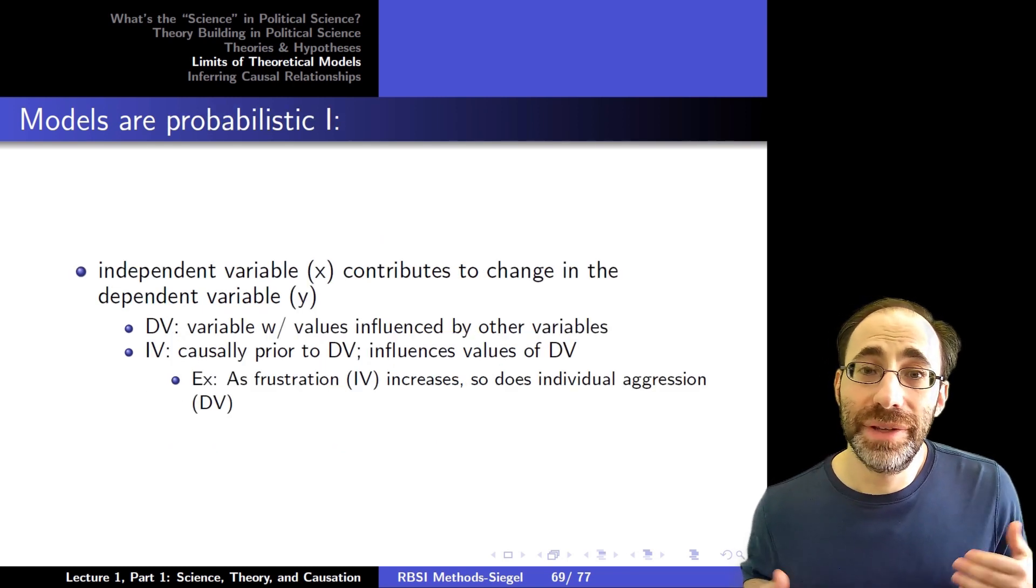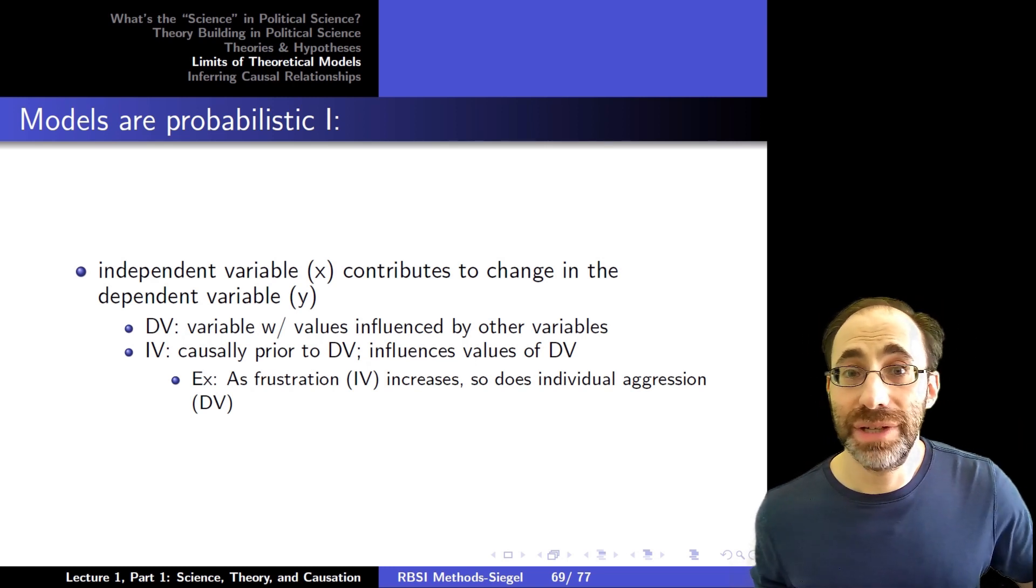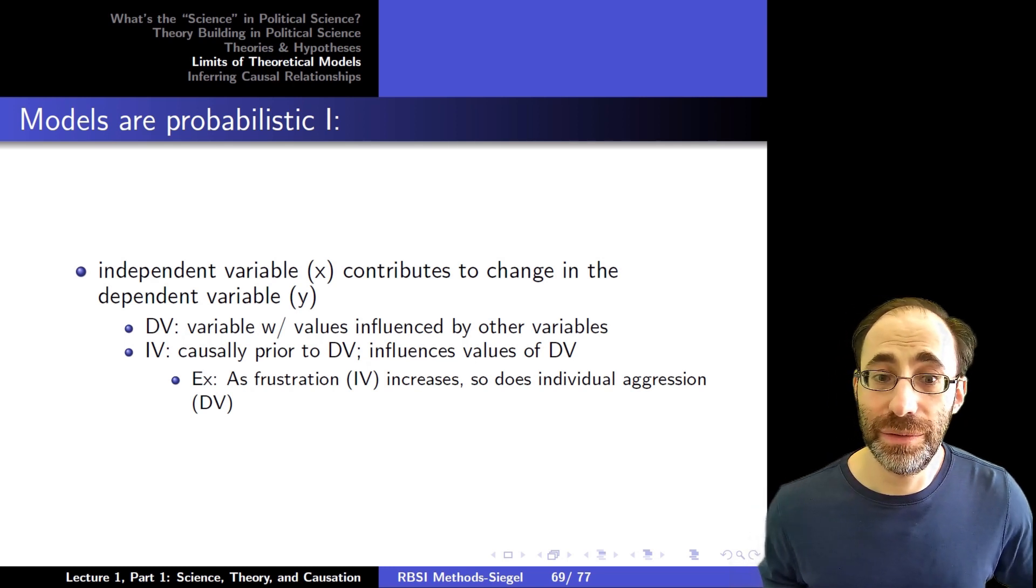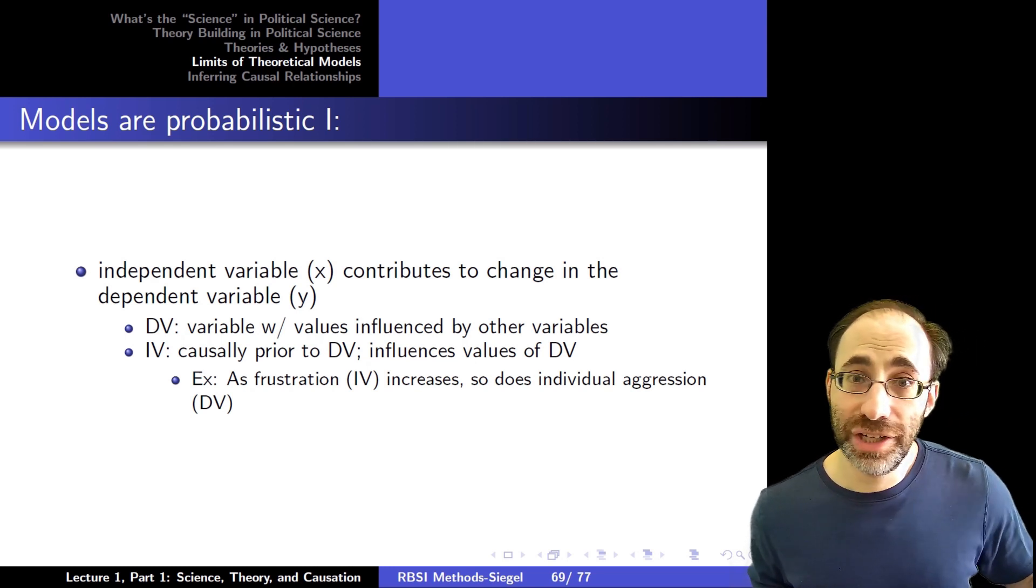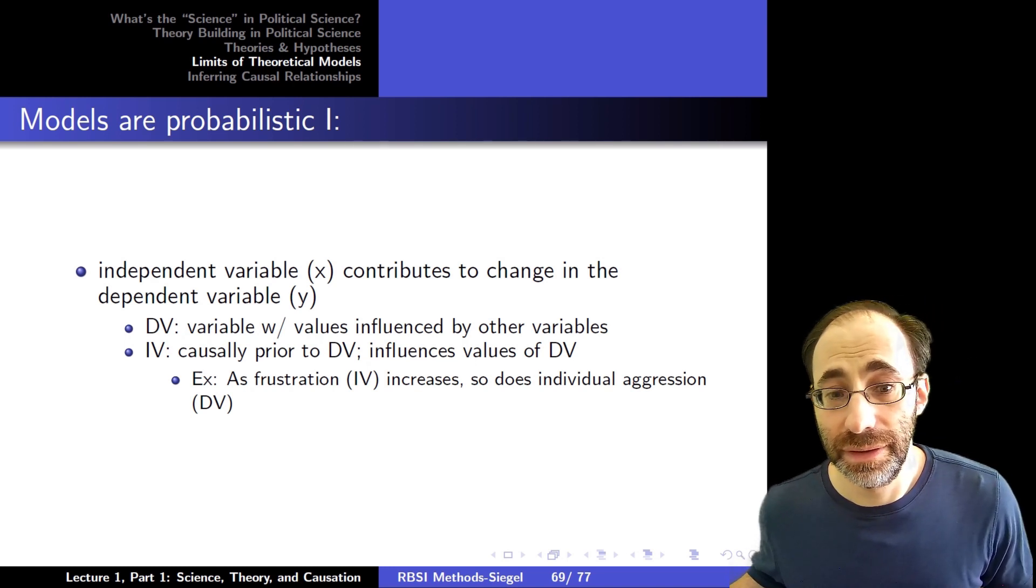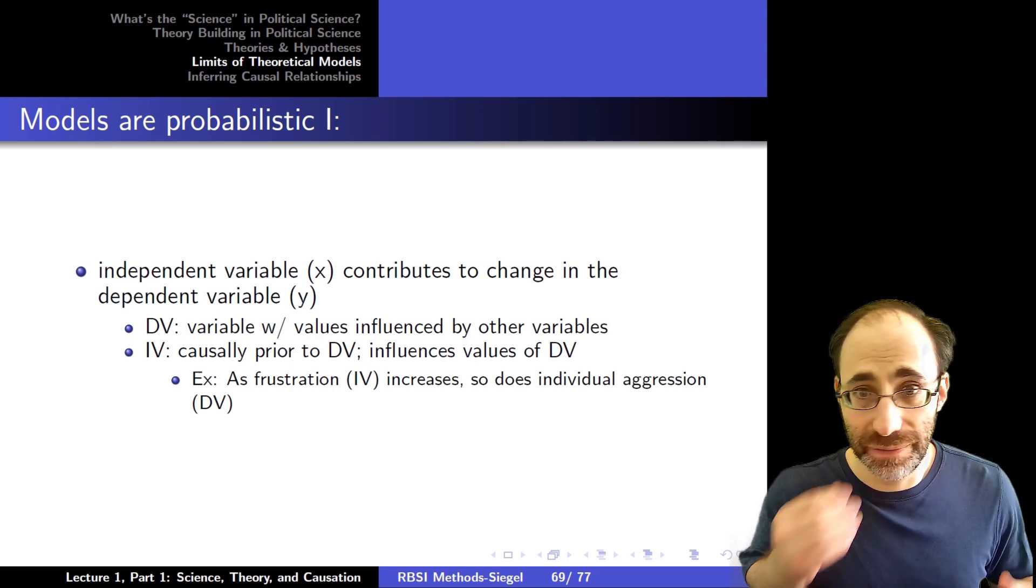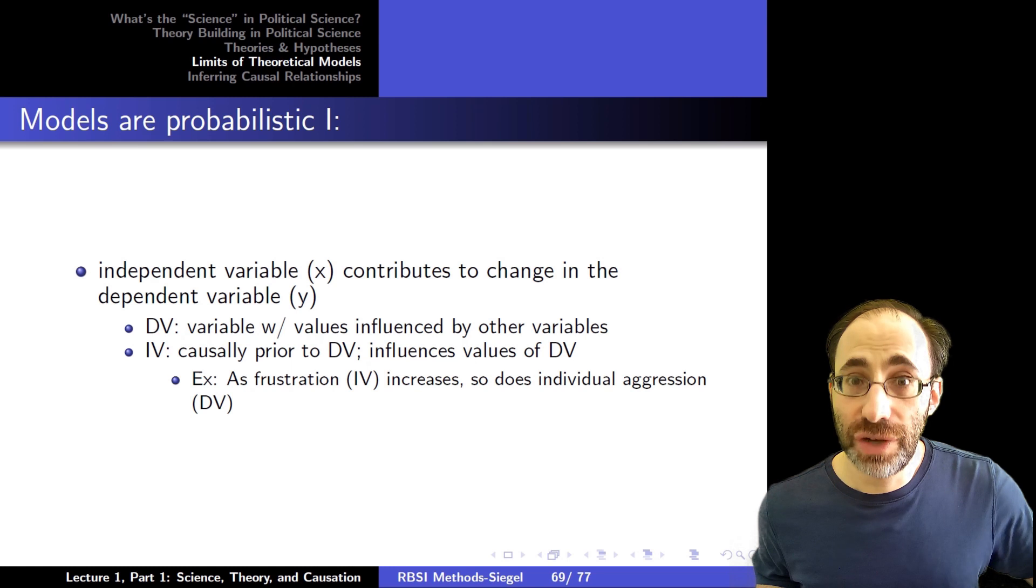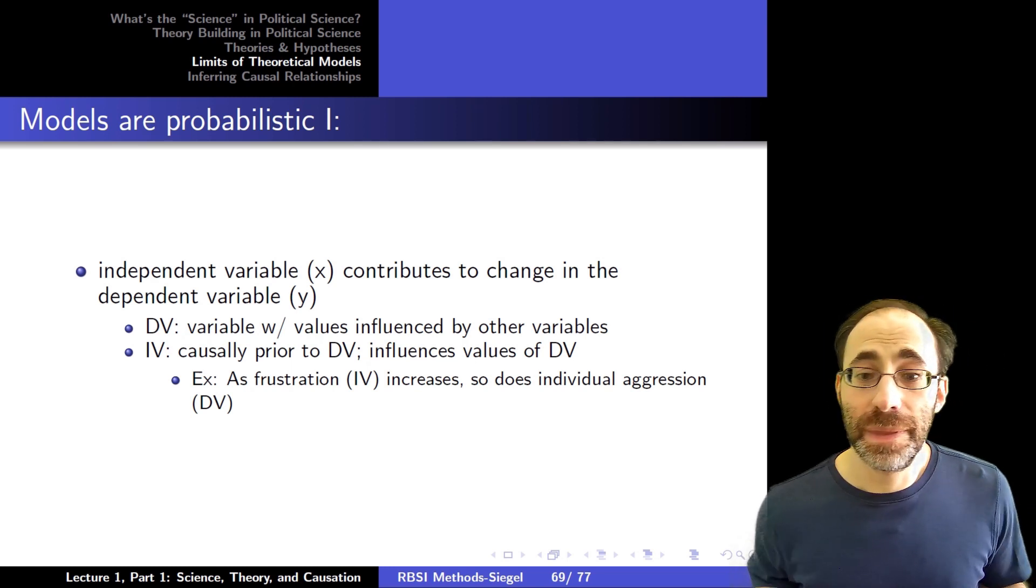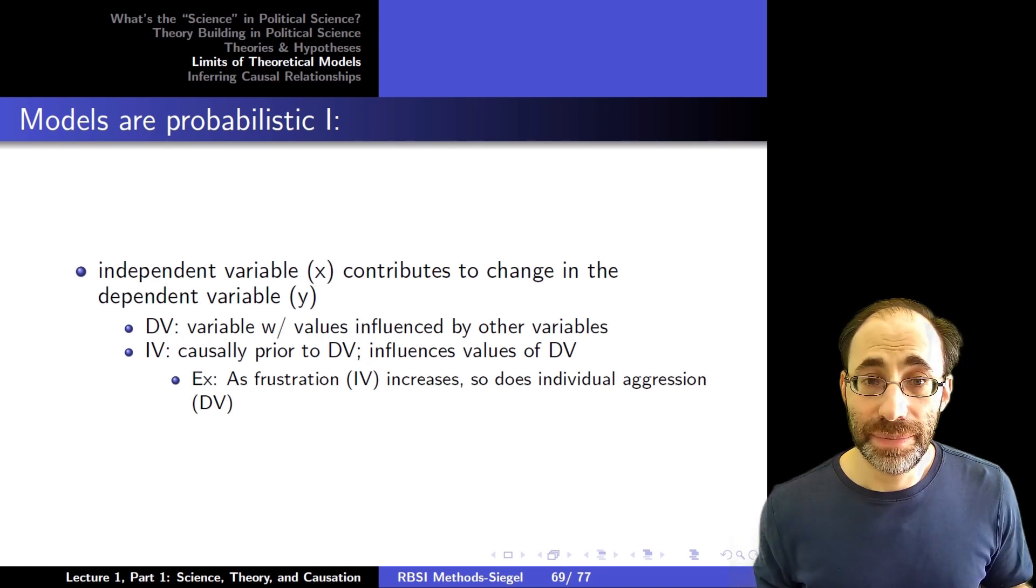Second here is models are probabilistic. What that meant, to reiterate from before, is we have independent variables x that are causally prior to dependent variable y, and changes in them cause changes in the dependent variable. So for instance, coming from the literature on mass violence, as frustration with the government increases, that's the independent variable, the dependent variable, individual aggression also increases. These are just examples.